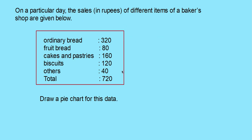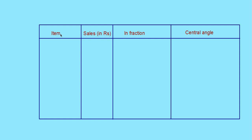Now, if the data is given in a tabular form, how will you draw the pie chart? Here is a question: on a particular day, the sales of different items at a breakfast shop are given. Ordinary bread 320, fruit bread 80, cakes and pastries 160, biscuits 120, others 40, total 720 rupees. We prepare a table with four columns: item, sales as given in the question, fraction, and central angle.